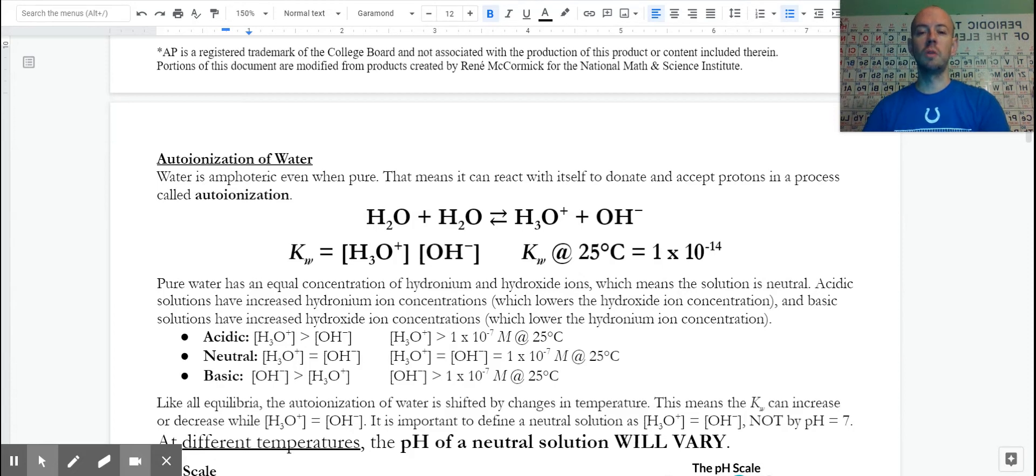So in pure water, we have a certain amount of hydronium and a certain amount of hydroxide, and they are equal to one another because the solution is neutral. But when we put in an acid or base, that causes that equilibrium to shift or it makes that amount of those ions unbalanced, more importantly.